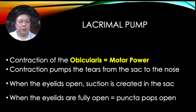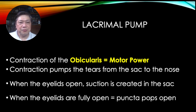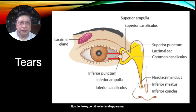A contraction of the orbicularis muscle empties your tear sac by pushing the fluids into the nose. When the eyelids open, the lacrimal sac — now empty — creates a vacuum. When the eyelids are fully opened, the punctum, the very beginning of your lacrimal system, becomes open. Fluid from your tears is then sucked into the punctum, into the ampulla, the canaliculi, the common canaliculus, and the lacrimal sac. This is repeated with every blink, so your blink is very important.